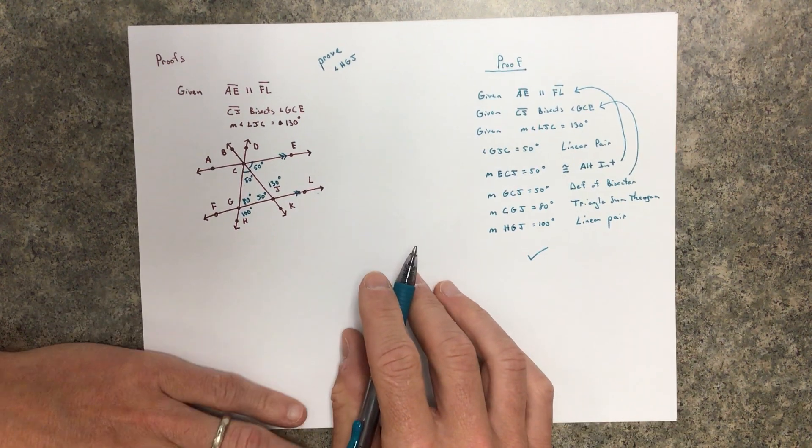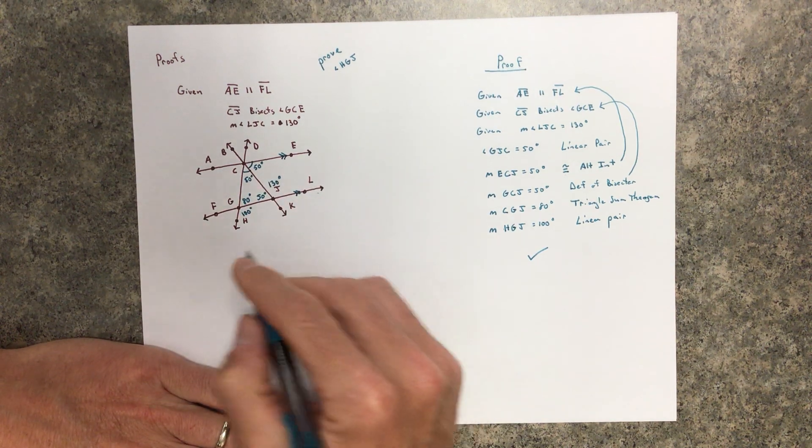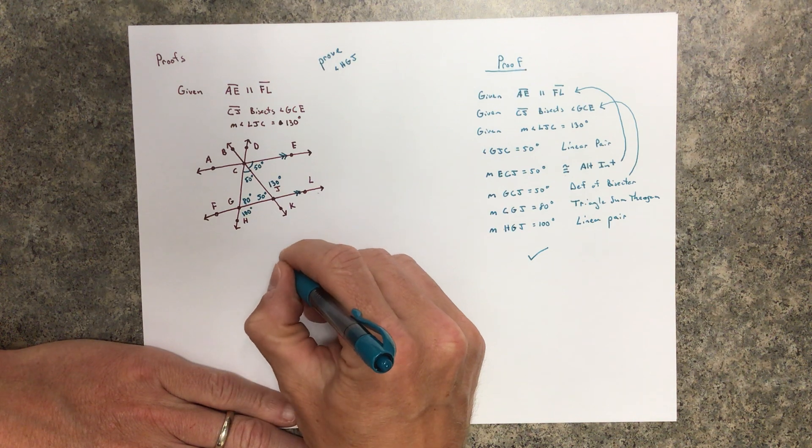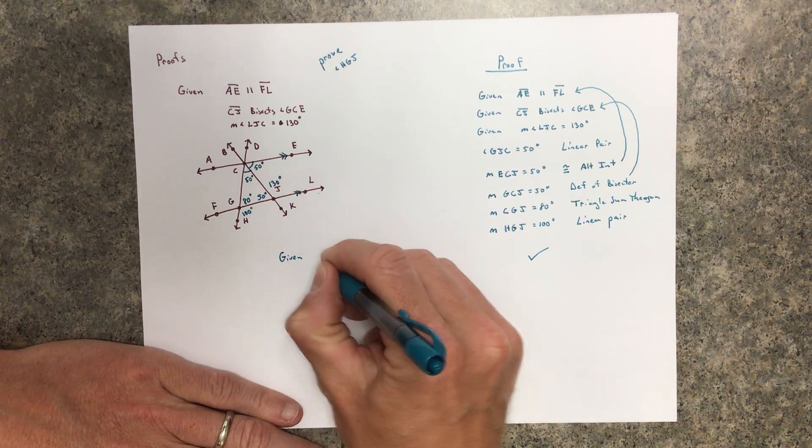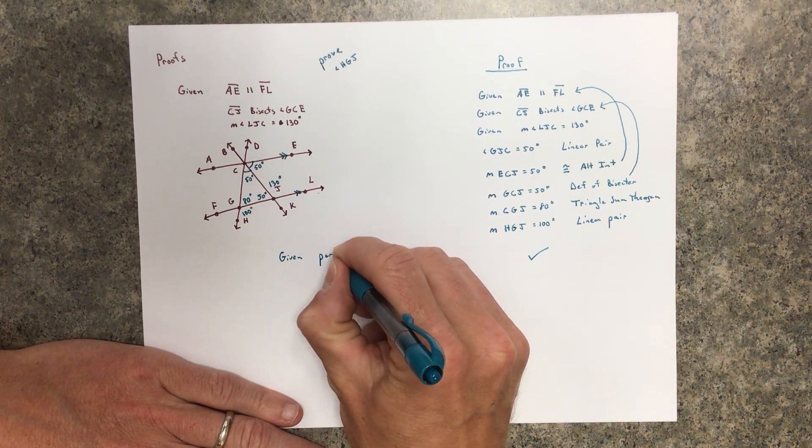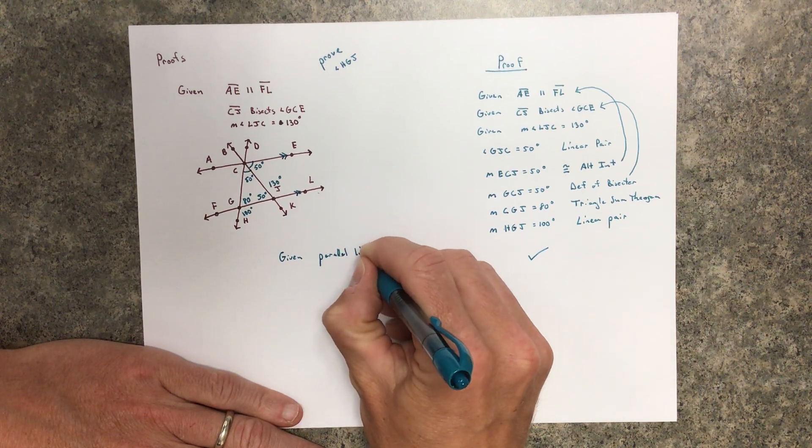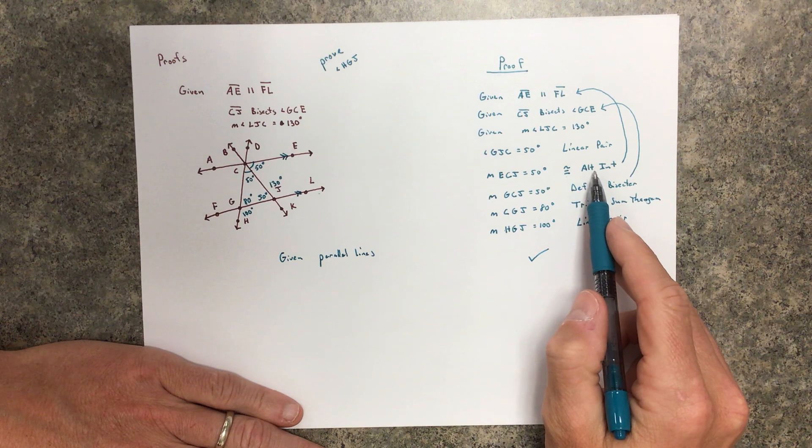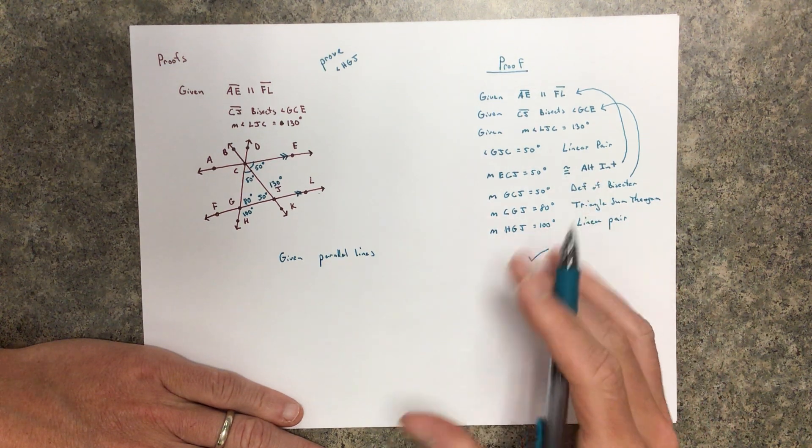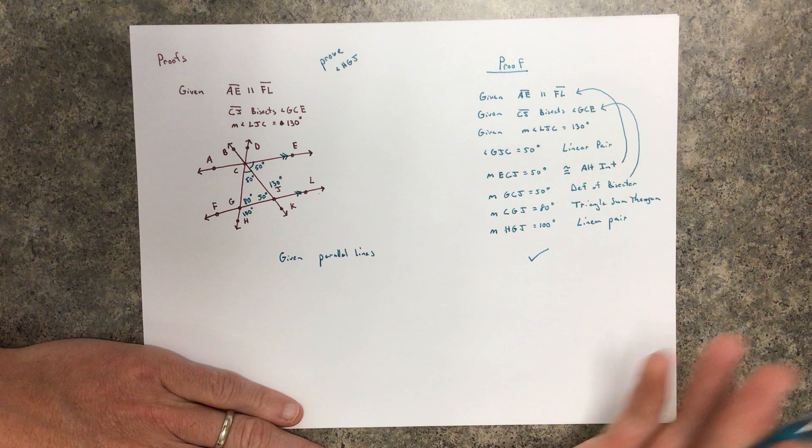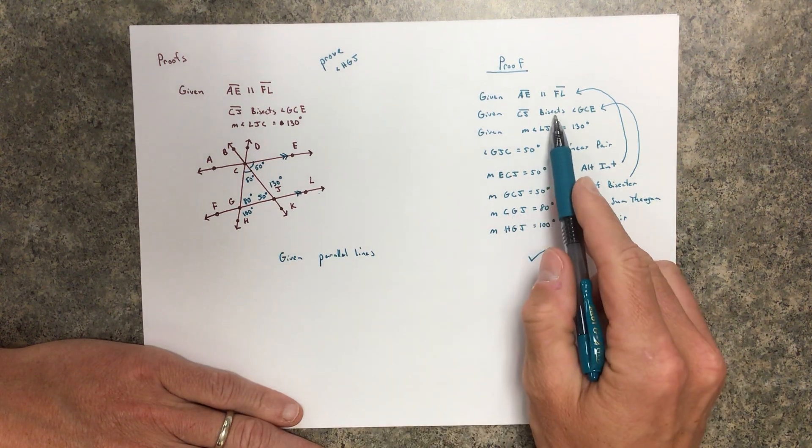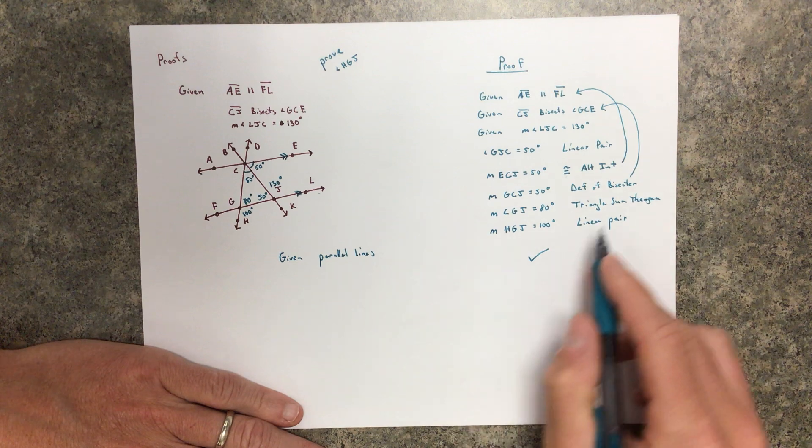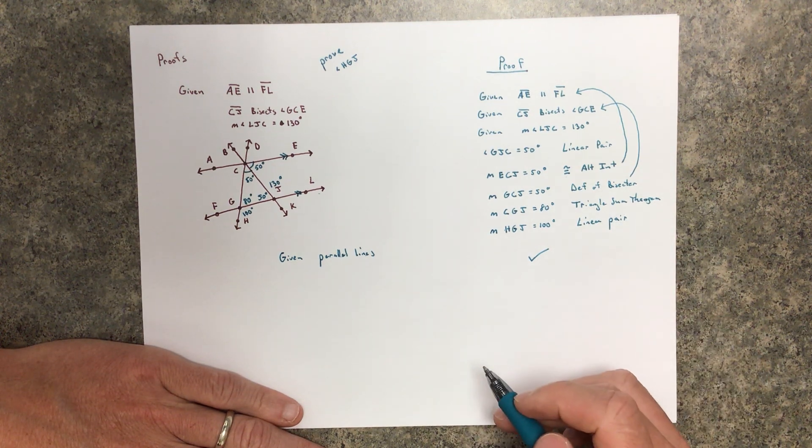In these proofs, all of these proofs are going to involve given parallel lines. Somewhere then in the proof, you're going to use alternate interior, corresponding, alternate exterior, consecutive interior, and then you're going to use all the old stuff. Definition of what it means to bisect, linear pair, vertical angles, triangle sum, all that good stuff.